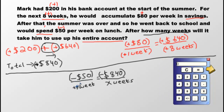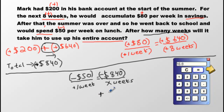Let's multiply the symbols first. We have a positive multiplied by a negative — cross-multiply — that's a negative. Take that negative and divide it by another negative, and you're going to get a positive number. We have positive weeks, which is correct — if you got a negative answer, something would be wrong with the symbols. Now numerically: 1 times 840 is 840, divided by 50 gives us 16.8 weeks. That's our answer: after 16.8 weeks, Mark will have used up his entire account.